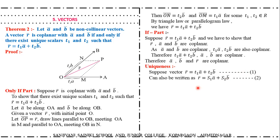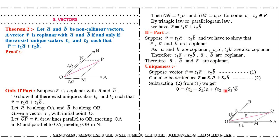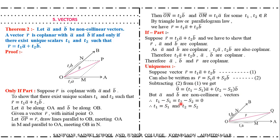Suppose R bar equals T1·A bar plus T2·B bar, and also R bar equals S1·A bar plus S2·B bar. Subtracting, we get T1 minus S1 times A bar plus T2 minus S2 times B bar equals zero bar. Since A bar and B bar are non-collinear, by the earlier theorem, T1 minus S1 equals zero and T2 minus S2 equals zero, implying T1 equals S1 and T2 equals S2. This establishes the uniqueness of the representation.